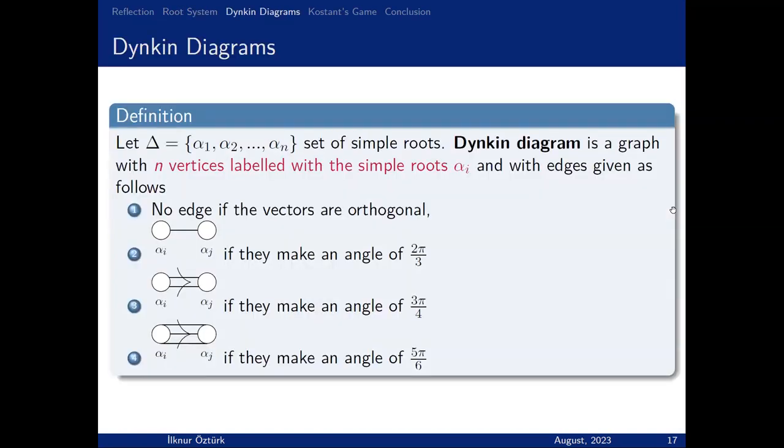Now we defined root systems. Next, we introduce Dynkin diagrams. We will match root systems to Dynkin diagrams. Dynkin diagrams encode all data from the root system. Dynkin diagrams have two important properties: vertices, which are labeled with simple roots, and edges. No edge if the vectors are orthogonal. Simple undirected edge if the angle is 2π/3. Directed double edge if the angle is 2π/4. And directed triple edge if they make an angle of 5π/6.